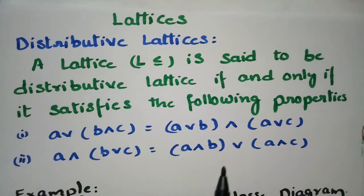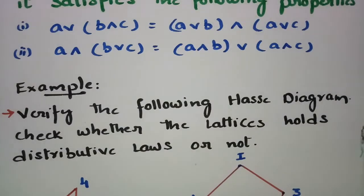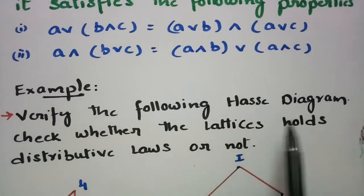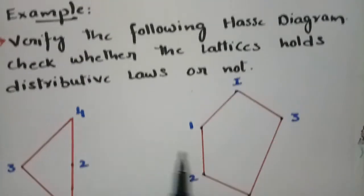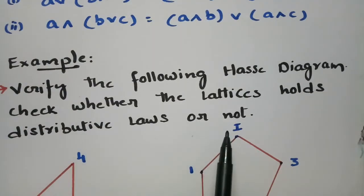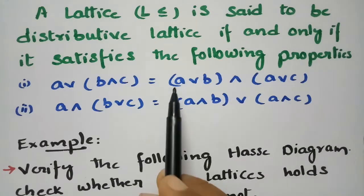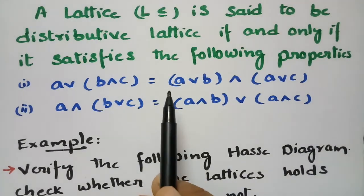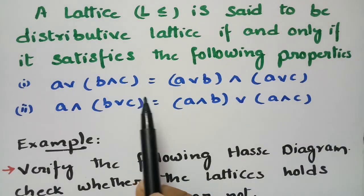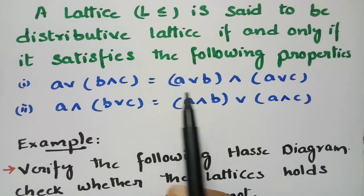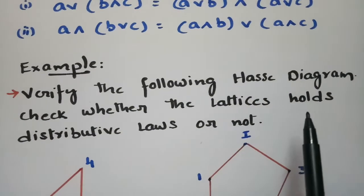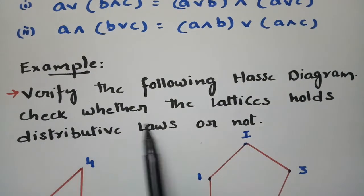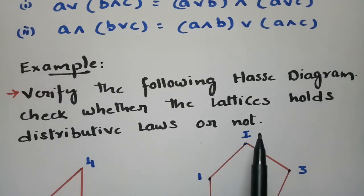We have a problem here. The first one is: verify the following Hasse diagrams. There are two Hasse diagrams and we need to check whether the lattices hold the distributive laws or not. If they satisfy LHS equal to RHS, then we say that the given lattice from the Hasse diagram is a distributive lattice.